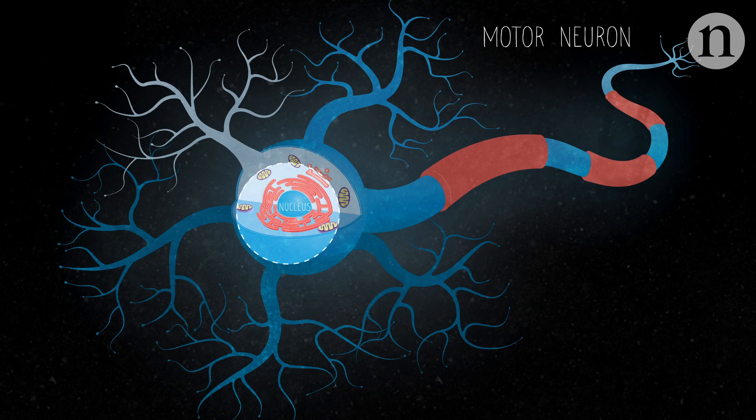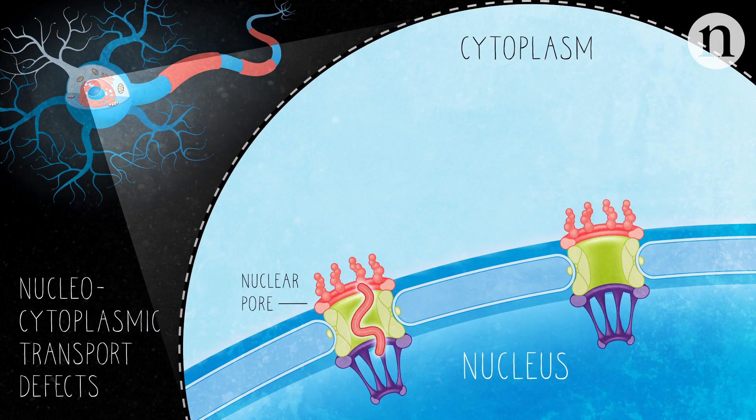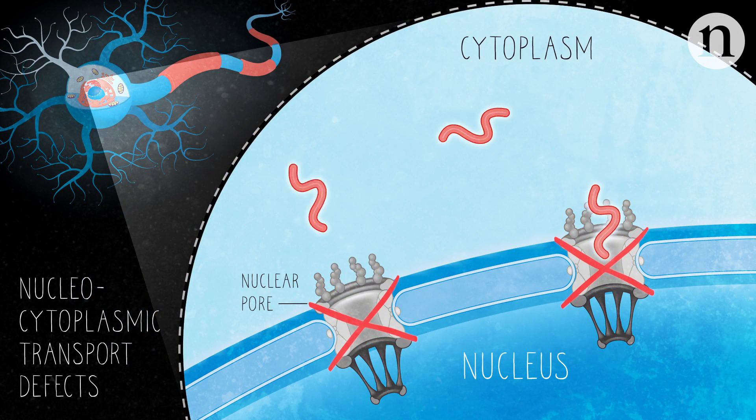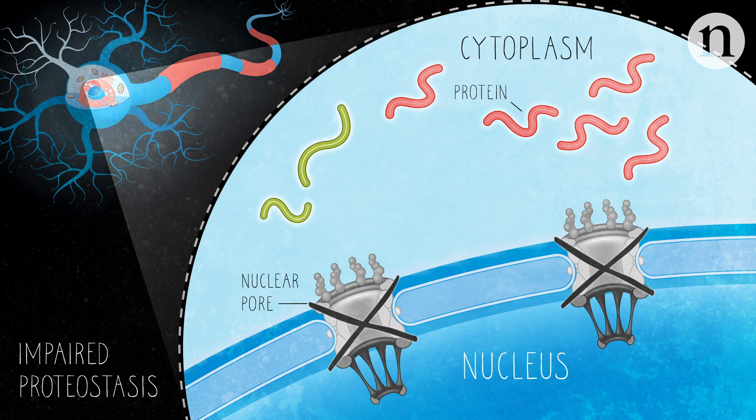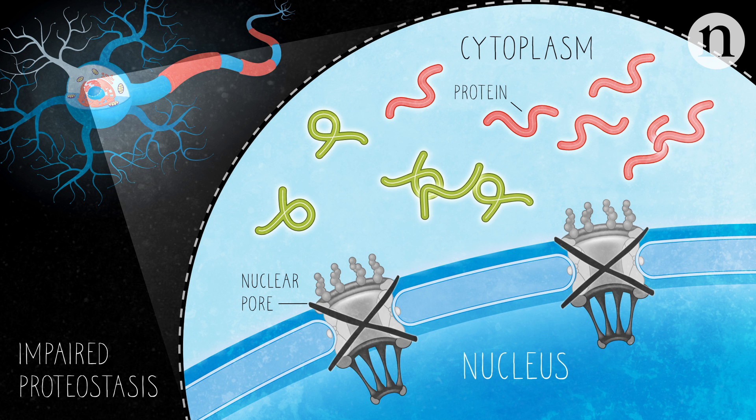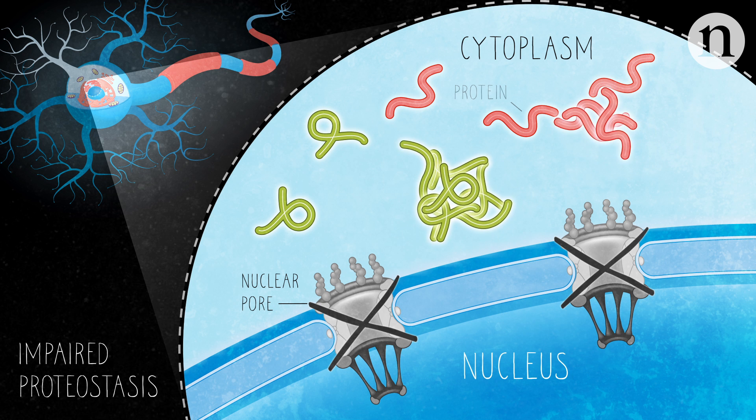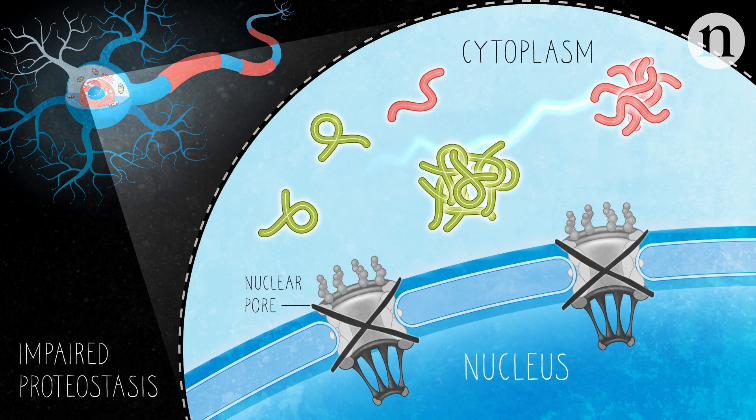Let's start in the cell body. Here, proteins that are not transported into the nucleus build up in the cytoplasm. Errors in the systems that build up and break down proteins also cause other misfolded proteins to accumulate. The different proteins can then aggregate and become toxic to cells in several ways.